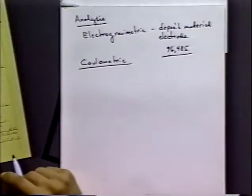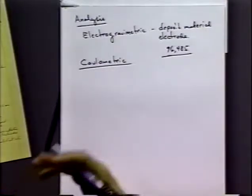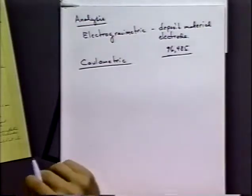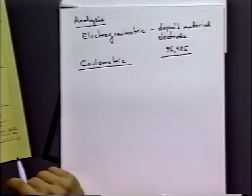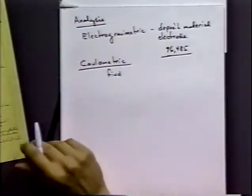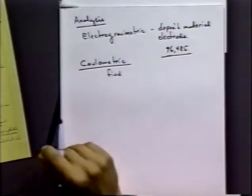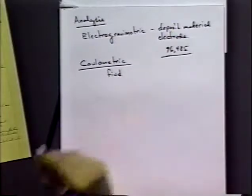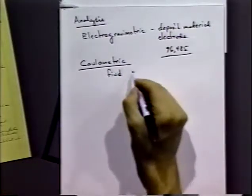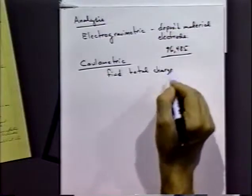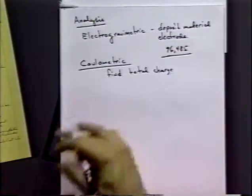A much more accurate way of doing this is coulometric analysis, where instead of depositing material, you do some reaction in solution to generate an oxidizing or reducing agent, or sometimes generate acids or bases in solution. You essentially do titrations by electricity — coulometrically generating a titrant rather than adding it with a burette. Because you can measure charge very accurately even in very small amounts, it's very easy to do exact titrations using coulometric methods. You just find total charge and need accurate ways of generating and measuring current.